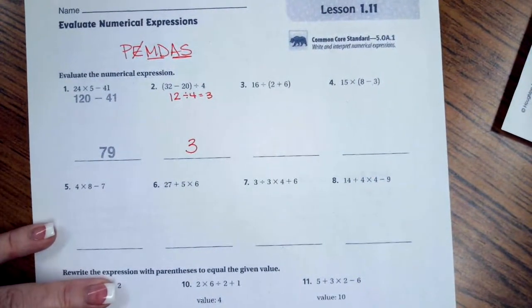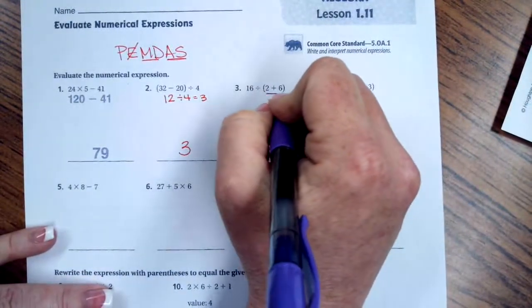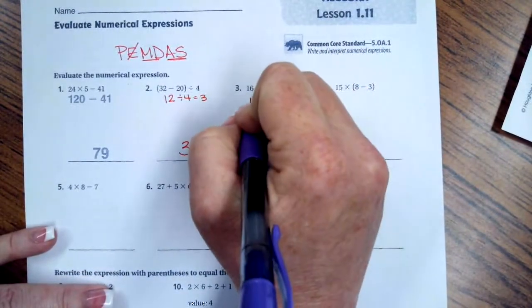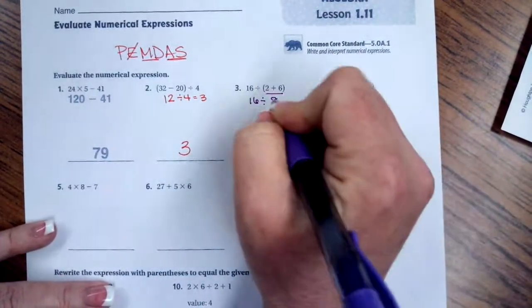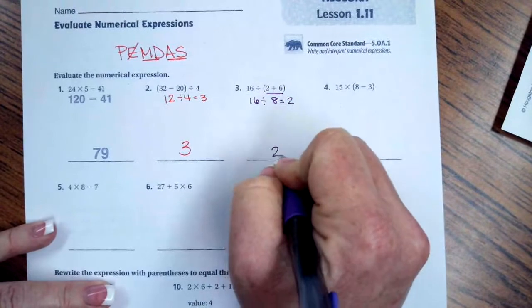So let's try that again. Parentheses first, so 2 plus 6 is 8. I still have 16 divided by that. Didn't go anywhere. 8 goes into 16, 2 times.